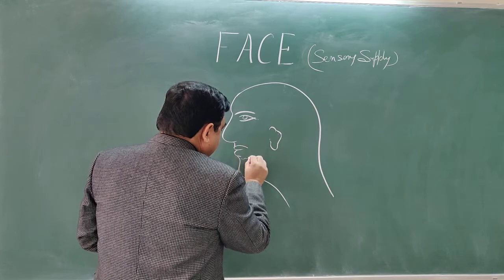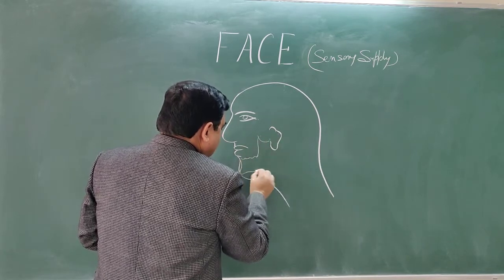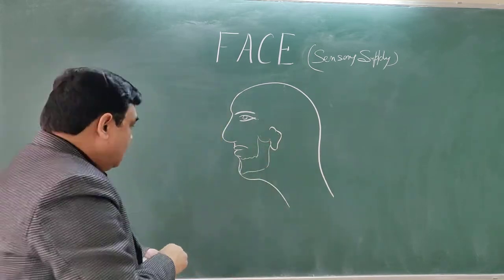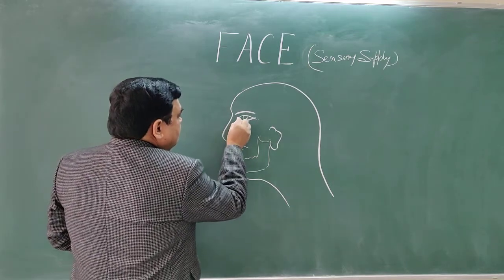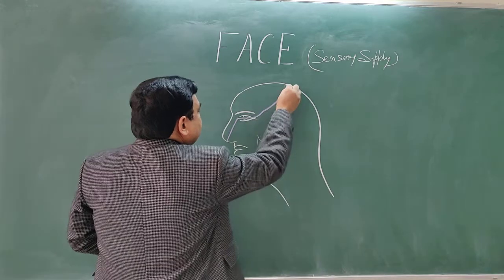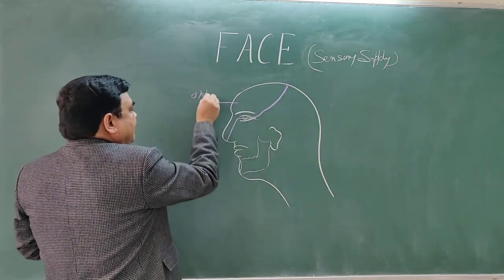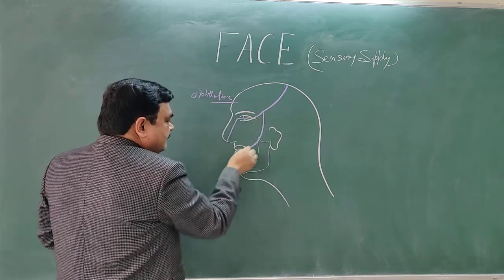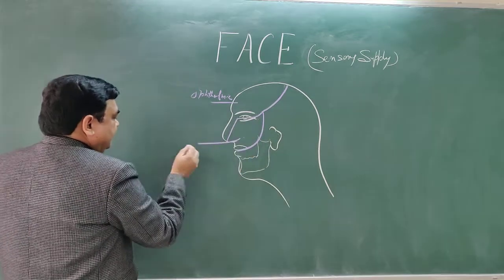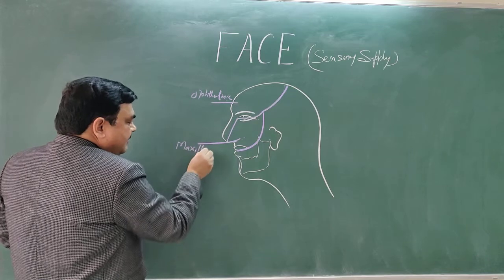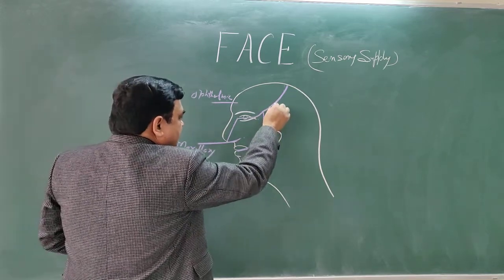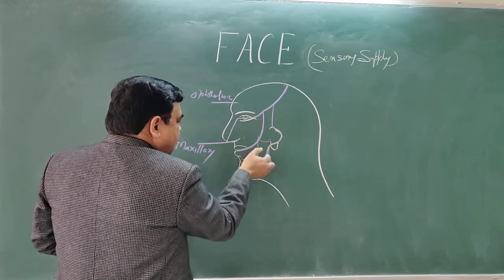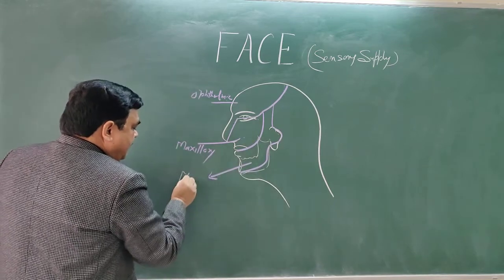Here is the position of mandible. This area is supplied by ophthalmic division of trigeminal nerve. This area is supplied by maxillary division of trigeminal nerve. And this part, this area, from here to here, this is supplied by mandibular division of trigeminal nerve.